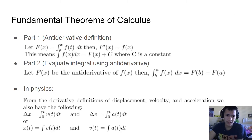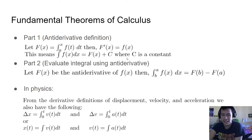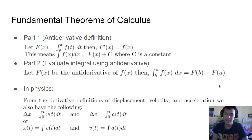Our second fundamental theorem of calculus is how to evaluate an integral using the antiderivative. If you let capital F(x) equal the antiderivative of f(x), then the definite integral from a to b of f(x) dx is just capital F(b) minus capital F(a). This is how you're going to be evaluating all of your definite integrals.